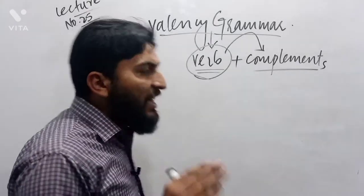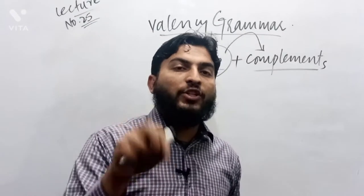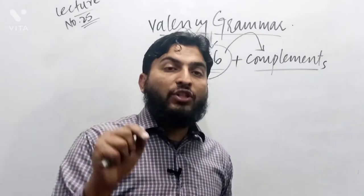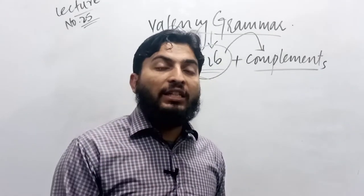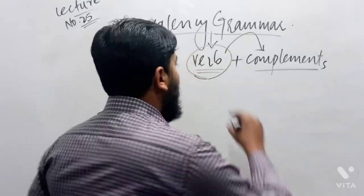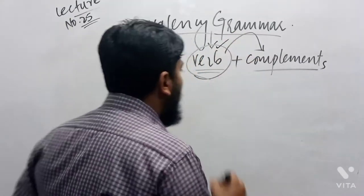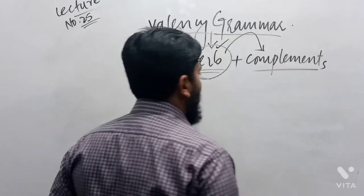This shows that in Valency grammar, we are concerned with the structure of a sentence. But the structure of a sentence mainly concerning or focusing on the verb. Now verb is there. What kind of complement is used?